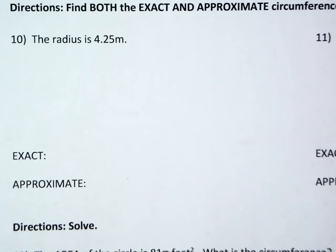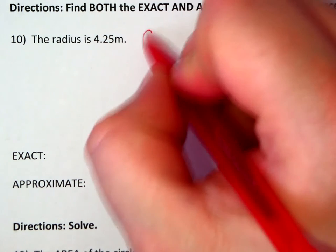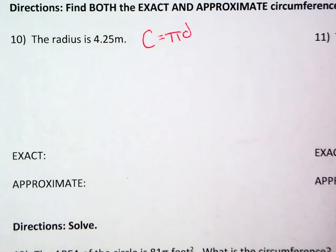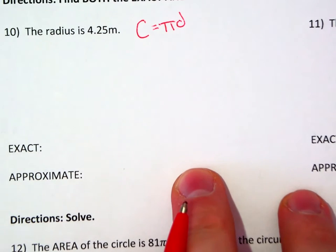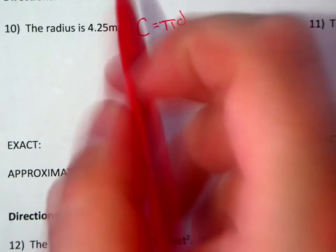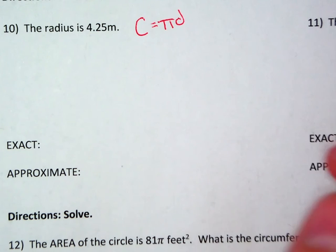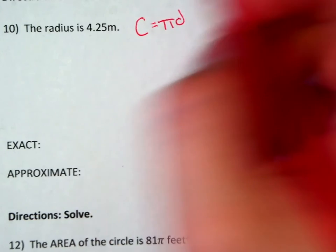Problem 10, find both the exact and approximate circumference. So we're going to be using the formula C equals pi D. On problem 10, I'm given a radius. A radius is not the same as a diameter, but rather it is half the distance of a diameter. So the first thing I need to do is multiply 4.25 times 2. That would give me 8.5.